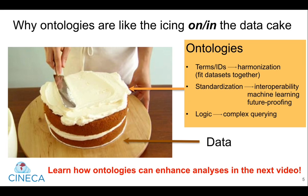That kind of standardization also enables better interoperability of the information across applications and systems. It prepares data for more complex analyses like machine learning, and it also prepares the data for future uses in applications that we might not have even thought of yet. Furthermore, as with icing layers inside the cake, ontologies also contribute structure, logic, and even additional layers of information, which serve to enrich the data and build the data cake. We'll learn how ontologies can enhance data analysis in our next video.